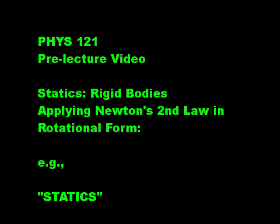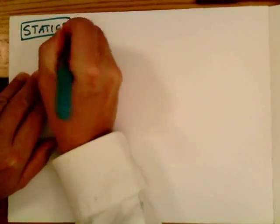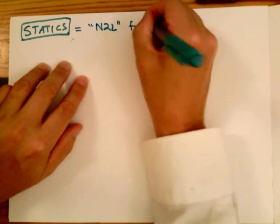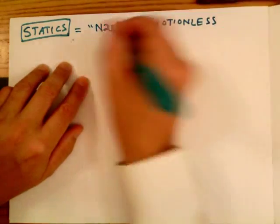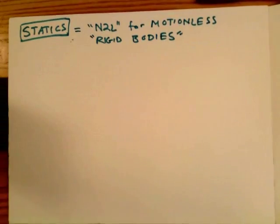Welcome to Physics 121 pre-lecture video on statics of rigid body motion. When we talk about statics, what we mean is the application of Newton's second law to systems which are motionless, not moving at all, at rest. And we're usually talking about rigid bodies, bodies with some physical extent.